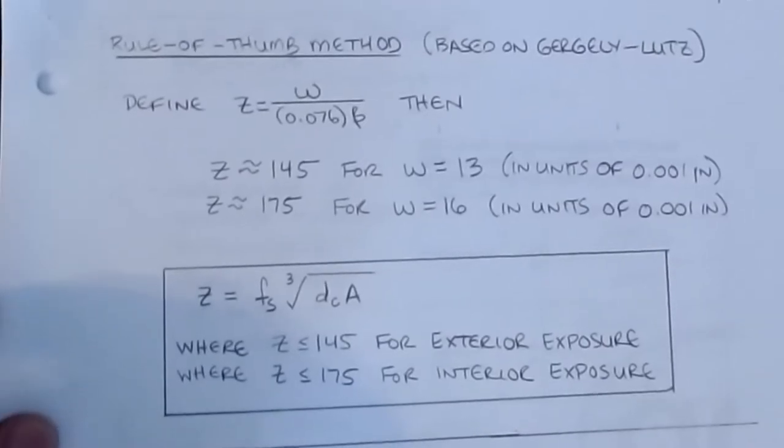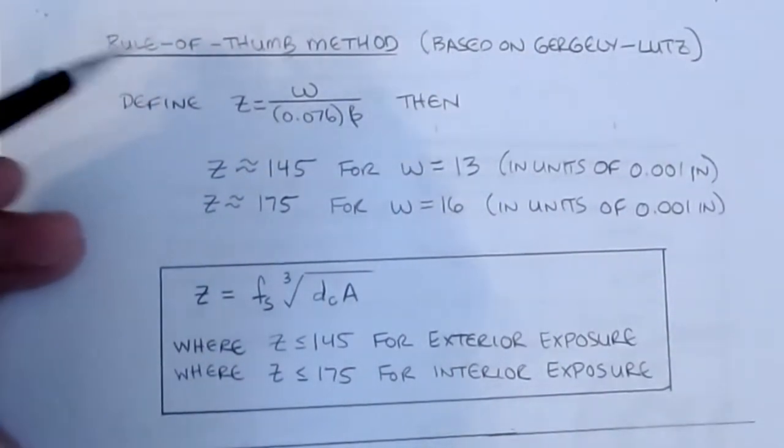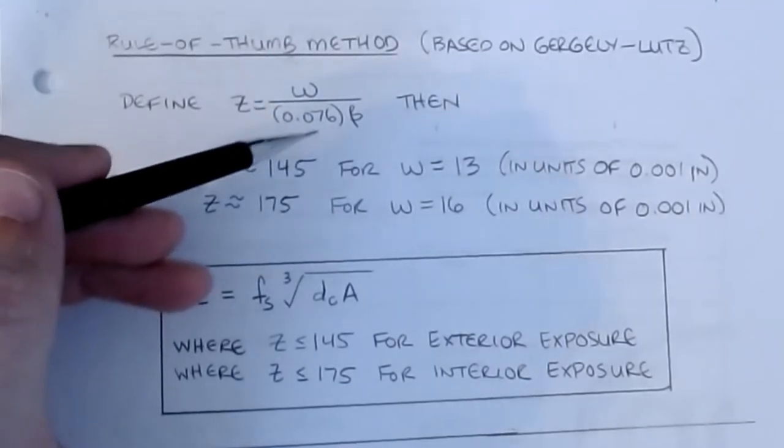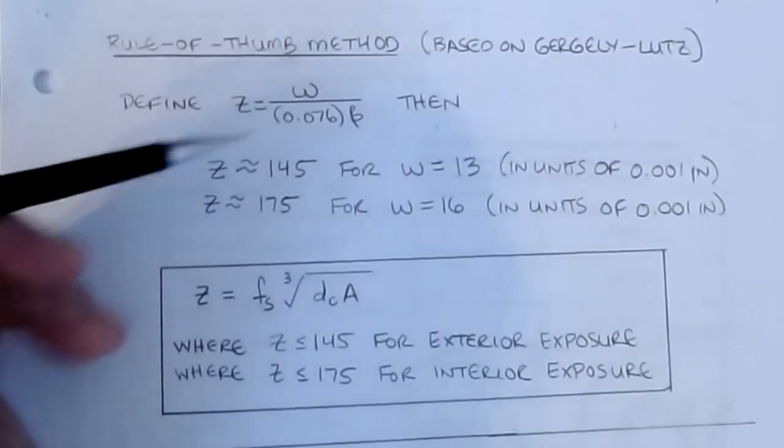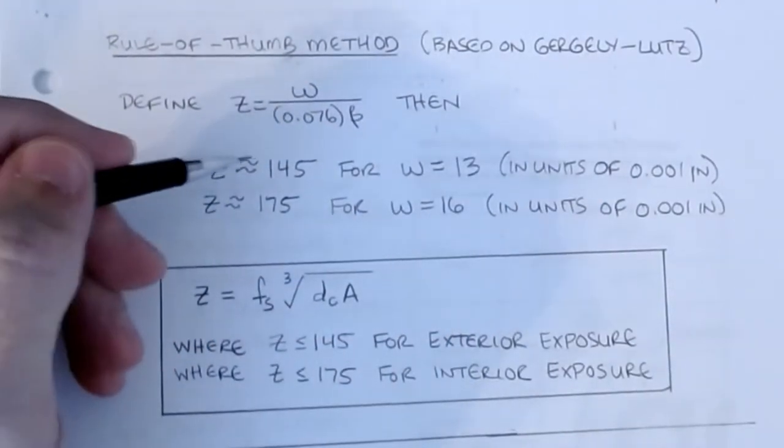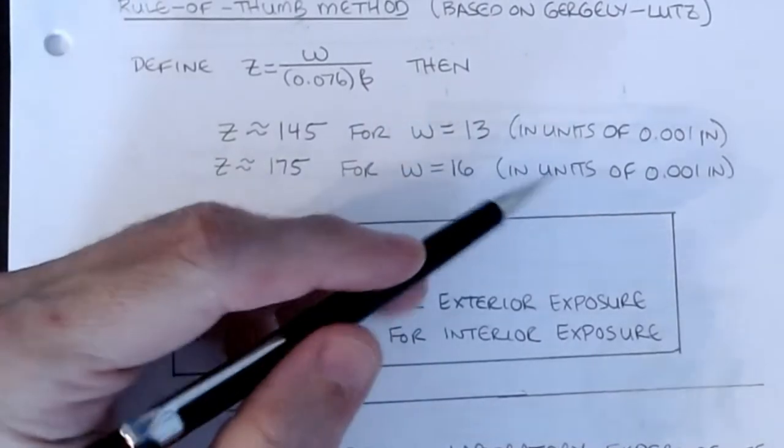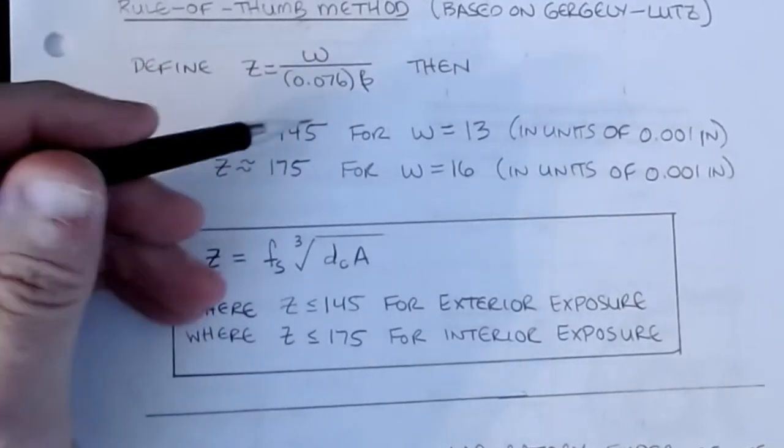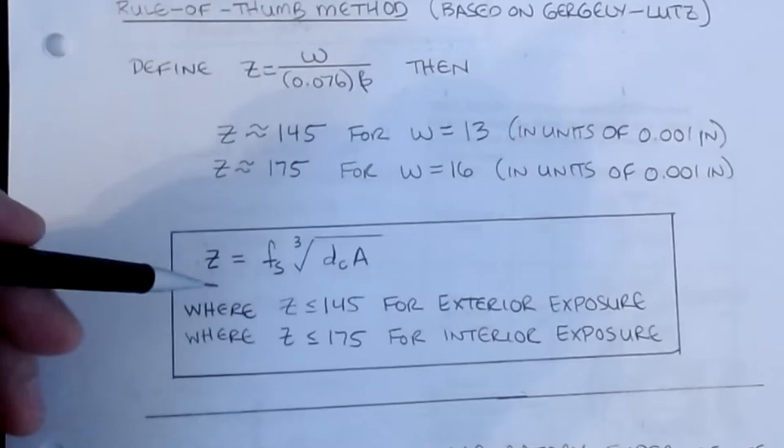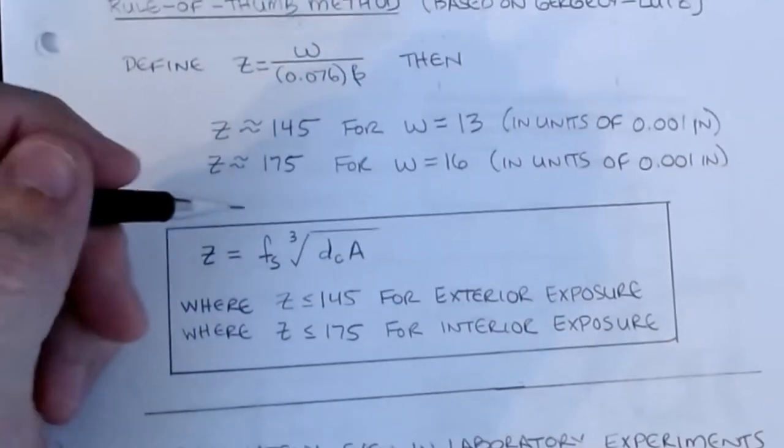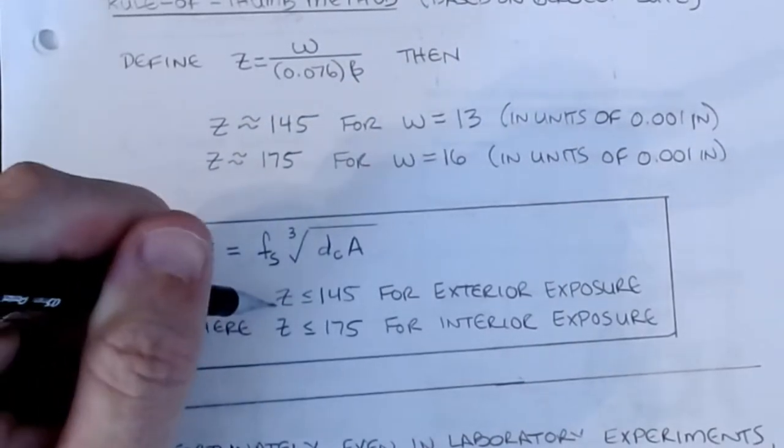Now, the way that we start to analyze this, and again, this isn't in your textbook, and it's not explicitly in the ACI code, but it's kind of the way that we can evaluate based off of the Gergely-Lutz method, is that the rule of thumb for this is that we're going to define a parameter Z as being that W parameter divided by 0.076 multiplied by beta. Then what happens is that for a W of 13, and again, this is in units of 1,000th of an inch, the Z corresponding is 1.45. And for W equal to 16, again in units of 1,000th of an inch, the Z corresponding is 1.75.